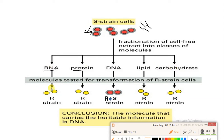Further, a test tube was already present with R-strain. In this test tube, the purified form of RNA was introduced and mixed, and you can see that the R-strain remained as it is. In the second test tube, protein was introduced where R-strain was already present, and the R-strain remained as it is.